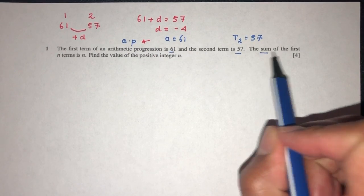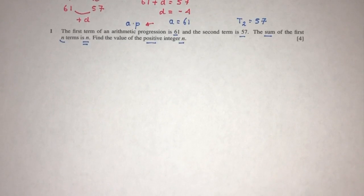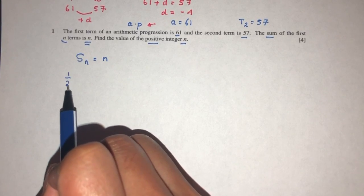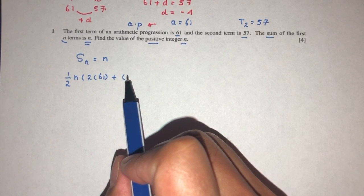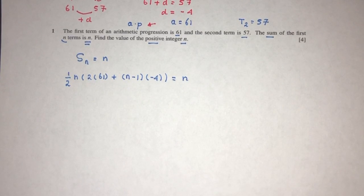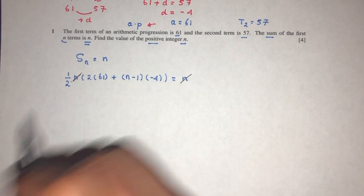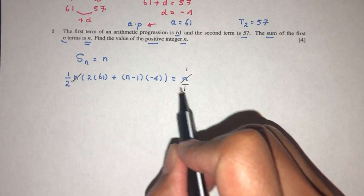The sum of the first N terms is N. Find the positive value of N. The formula is half times N, 2 times A, plus N minus 1 times D, where D is minus 4. This is supposed to give you the value of N according to the question. We can divide by N on both sides so this cancels out, then cross multiply: 1 times this and 2 times this. So on this side, you will have 2 times 61, plus minus 4 times N minus 1, and that will equal 2.